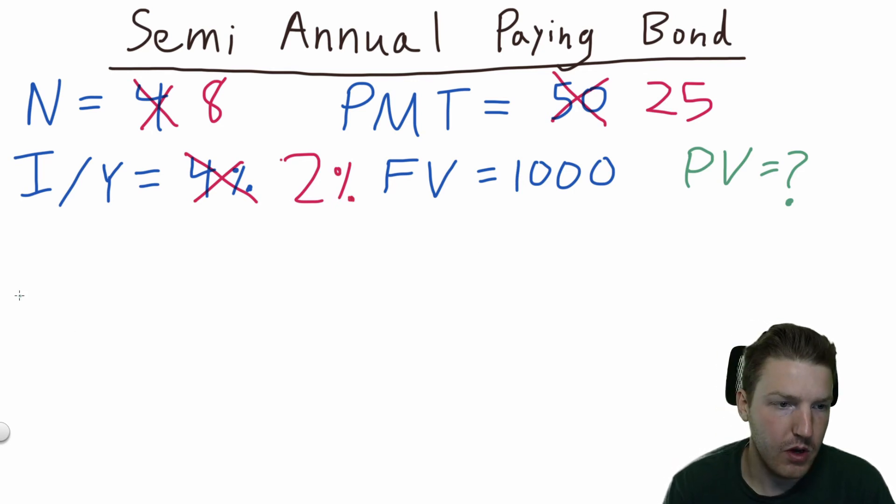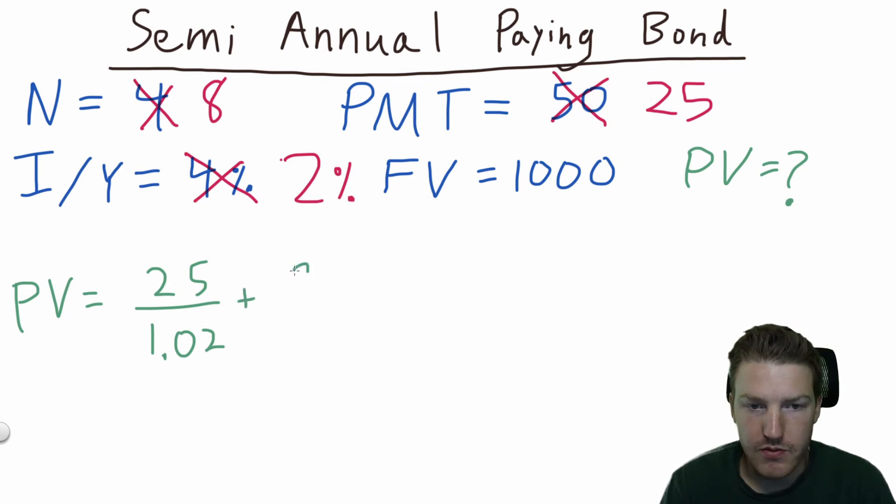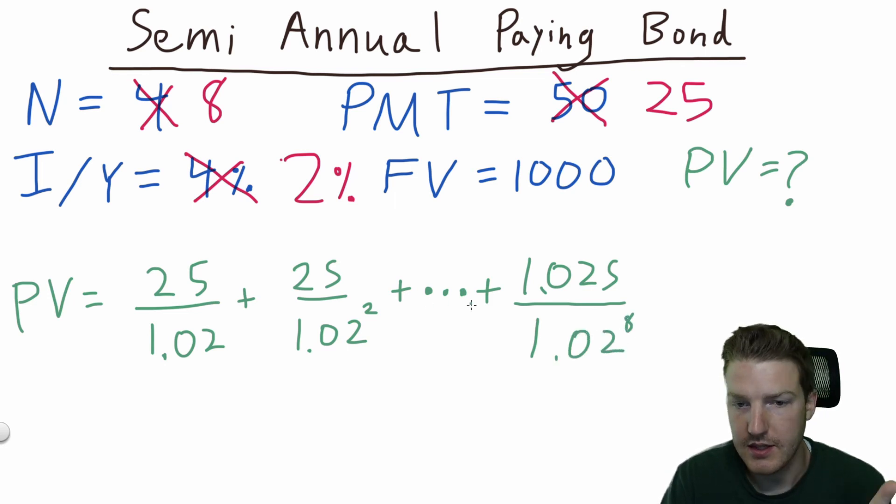Okay. And then the formula is going to look a lot like before, where the payment of 25 over 1.02, that's the new discount rate, plus 25 over 1.02 to the power of two. But this time, instead of going to four, we actually go to eight. So the last one will be $1,025, right? The $1,000 notional plus the $25 coupon payment divided by 1.02 to the power of eight. And these dot, dot, dots represent three, four, five, six, and seven.